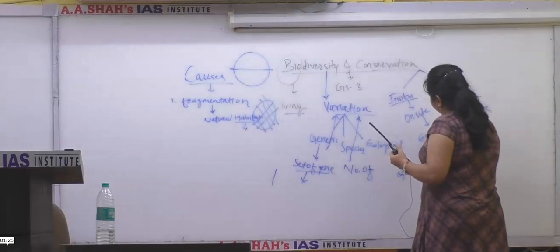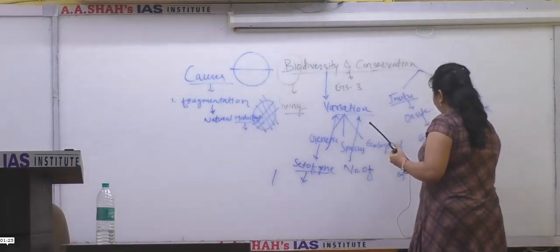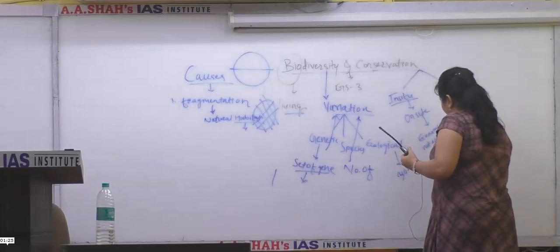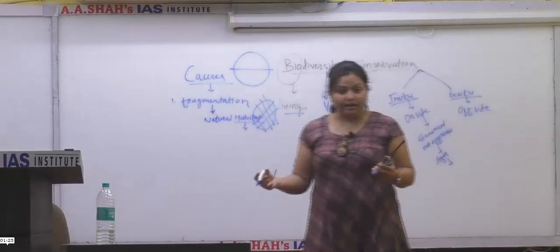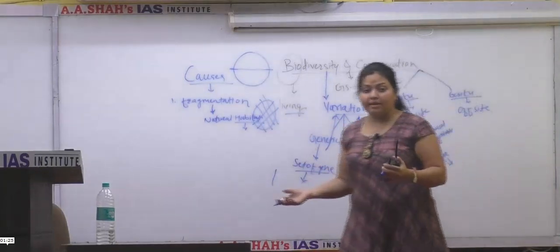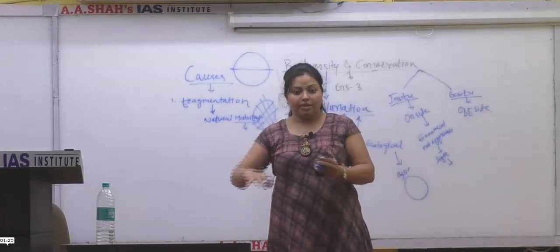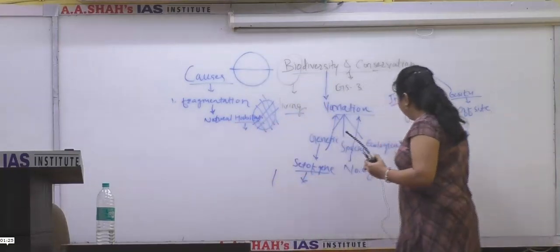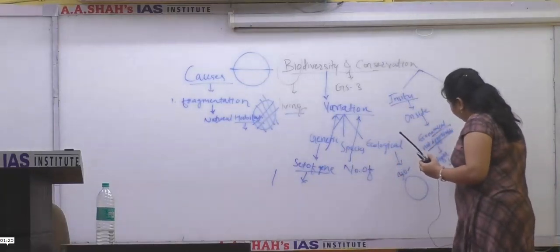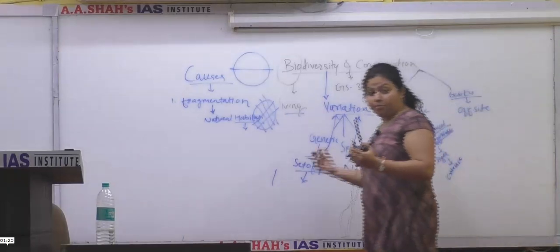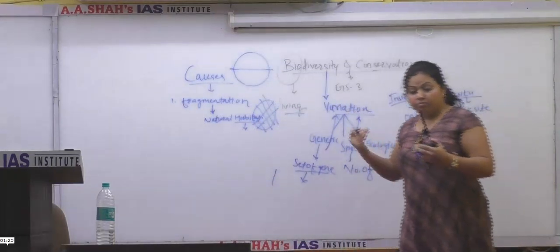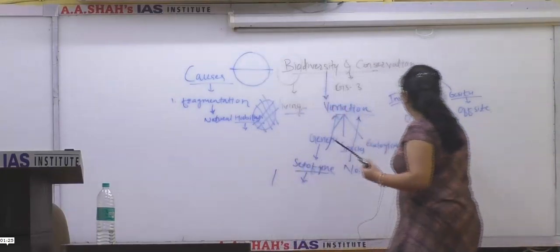In situ is not economically affordable because when we need to conserve tiger, we cannot conserve just one or two tigers — we need to conserve the total forest area, so expenses will be high. In situ also criticizes development because no human activity is possible in in situ conservation — you cannot go and take food, fuel, fruits from the forest areas.